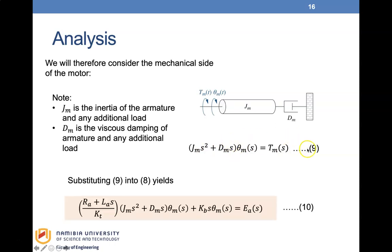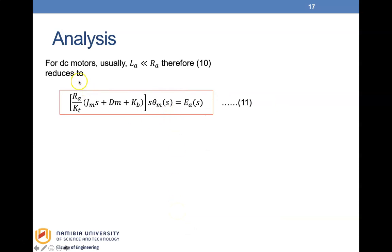Substituting equation nine into eight, we replace TM with (JM·S² + DM·S)·θM(S), giving equation ten with both θM and EA present. For DC motors, the inductance LA is much less than the resistance RA, so we can reduce equation ten to: (RA/KT)·(JM·S + DM)·S·θM(S) + KB·S·θM(S) = EA(S). This gives equation eleven.